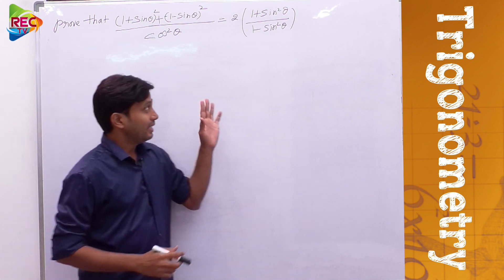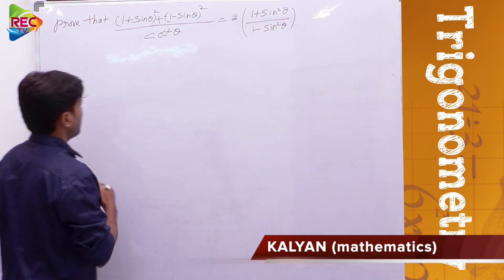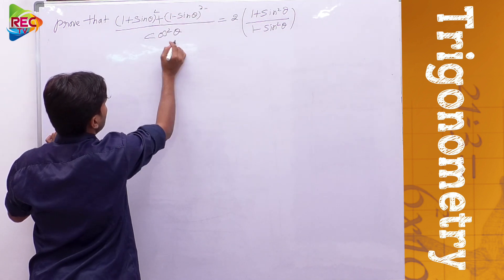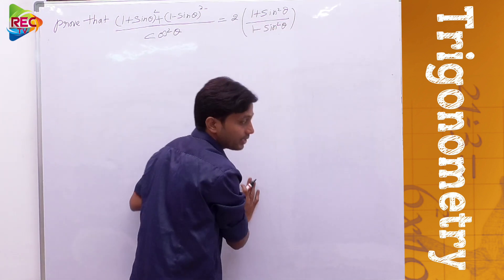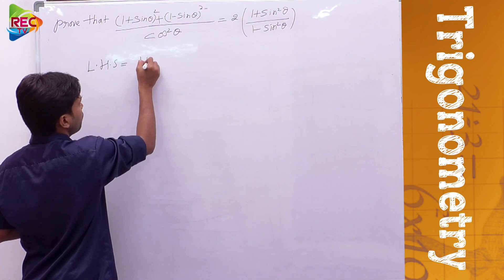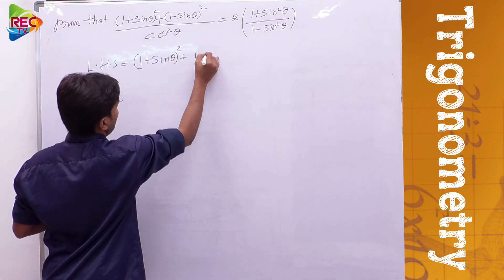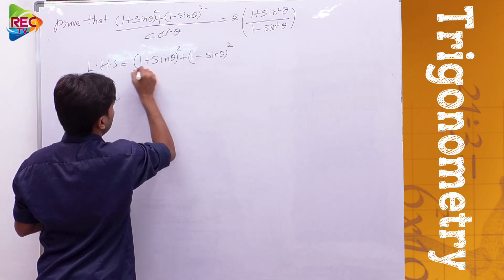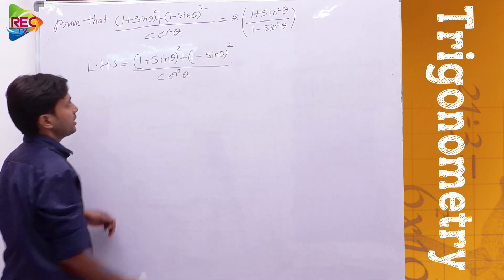Let us solve the next problem. We need to prove that (1 + sinθ)² + (1 - sinθ)² divided by cos²θ is equal to 2(1 + sin²θ) divided by (1 - sin²θ). We take the LHS part, which is (1 + sinθ)² + (1 - sinθ)² over cos²θ.